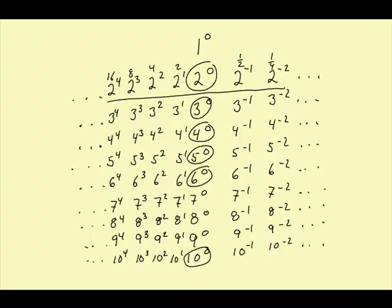Now the number system we're used to, which is the number system we use every day, is based on the number 10. 10 to the 0 is 1, 10 to the 1 is 10, 10 squared is 100, 10 to the third is 1,000, 10 to the fourth is 10,000.